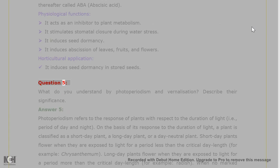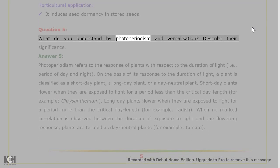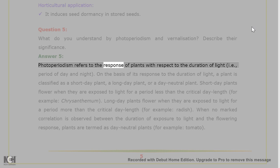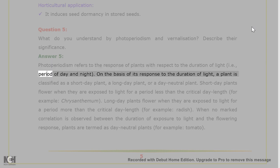Question 5. What do you understand by photoperiodism and vernalization? Describe their significance. Answer 5. Photoperiodism refers to the response of plants with respect to the duration of light, i.e., period of day and night.